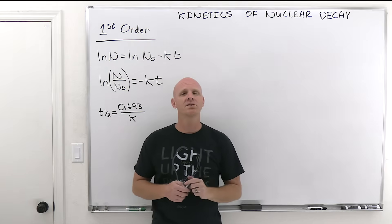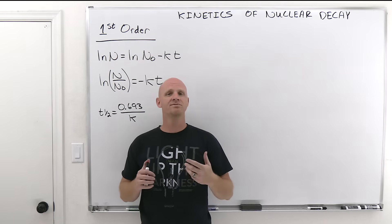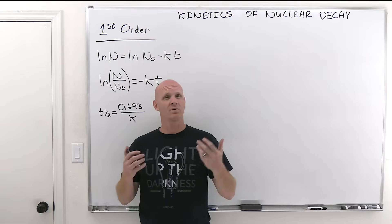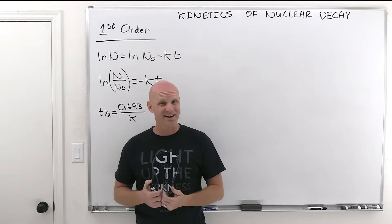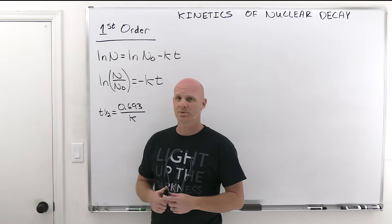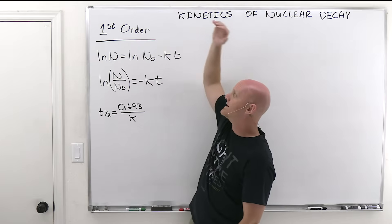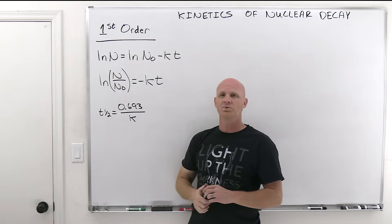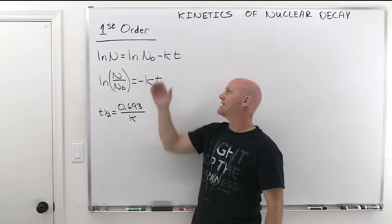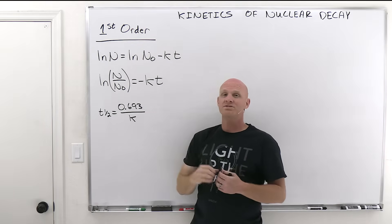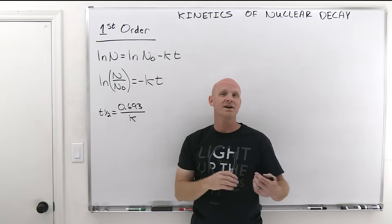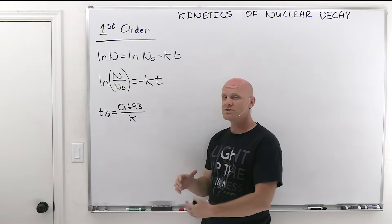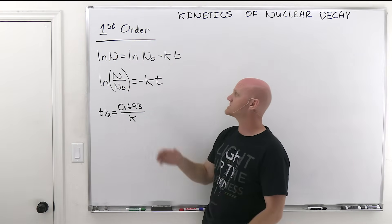The kinetics of nuclear decay is largely going to be review for the majority of this lesson, and then we'll apply it to radioactive dating towards the end. It turns out that all of nuclear decay is first order — all the spontaneous routes of decay. So in being first order, we don't have to worry about zero order or second order like we did back in the chemical kinetics chapter. We'll be dealing exclusively with this first-order process.